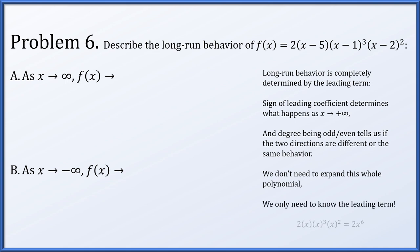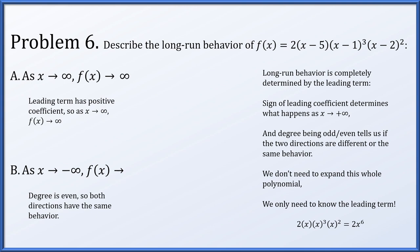Taking x from each factor — 2 · x · x³ · x² — the leading term is 2x⁶. The leading coefficient is positive, so as x → +∞, f(x) → +∞. The degree is 6, which is even, so the end behavior is the same in both directions. Therefore as x → −∞, f(x) also goes to +∞.